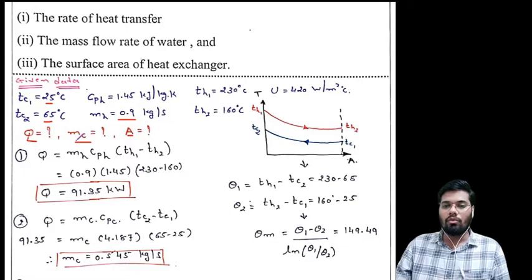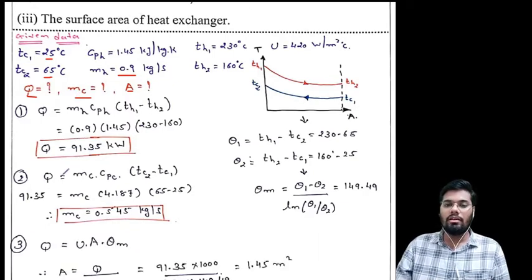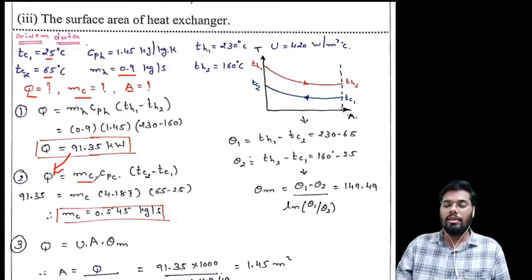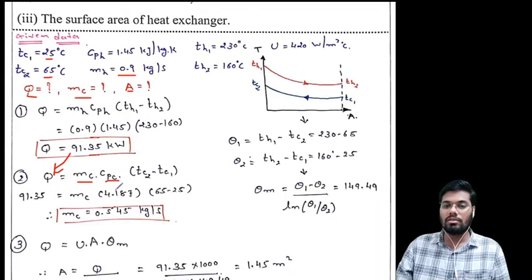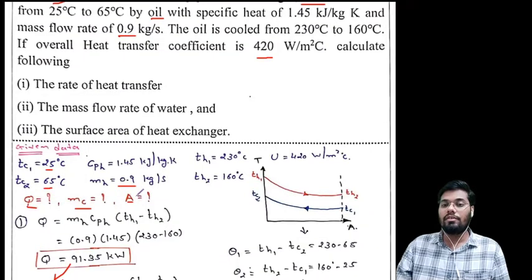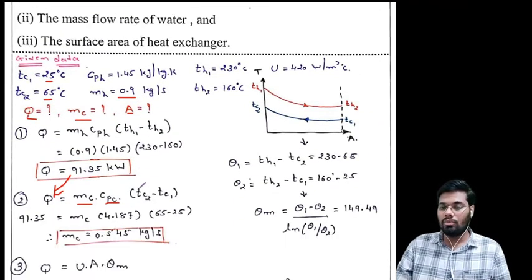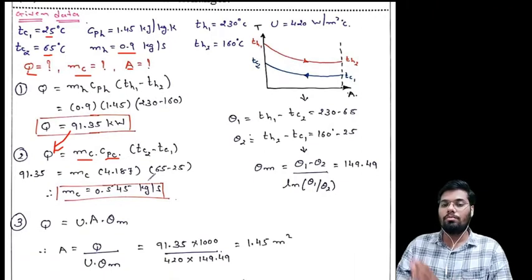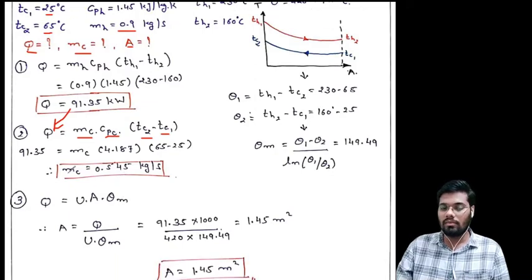Now we find the mass flow rate of cold fluid using Q = MC·CPC·(TC2 - TC1). We know Q = 91.35 kW. The cold fluid is water, so CPC = 4.186 kJ/kg·K — it's not always given in the question, so we need to remember this value. TC2 - TC1 = 65 - 25 = 40°C. Solving gives MC = 0.54 kg/s.